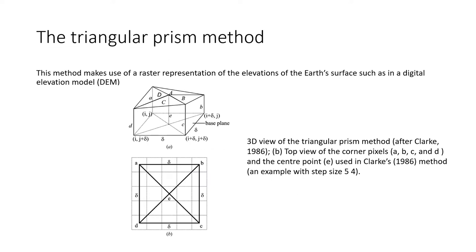There are many methods to calculate D. One of them is the triangular prism method. This method makes use of raster representation of elevation of the earth's surface, such as in a digital elevation model DEM. As you can see, the 3D view of the triangular prism method is from Clark's 1986 paper. The second figure shows the top view of corner pixels A, B, C, and D, and center point E used in Clark's 1986 method.